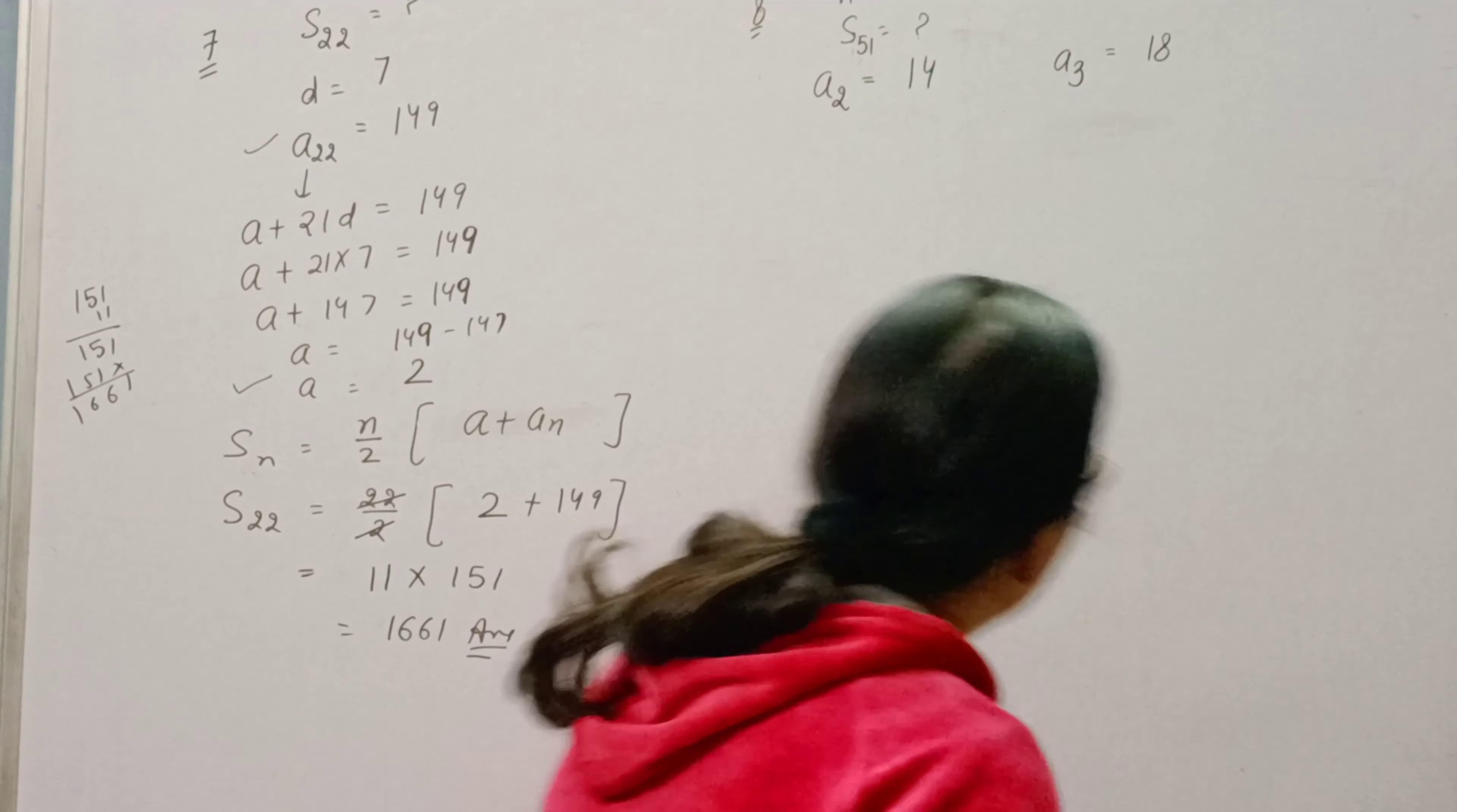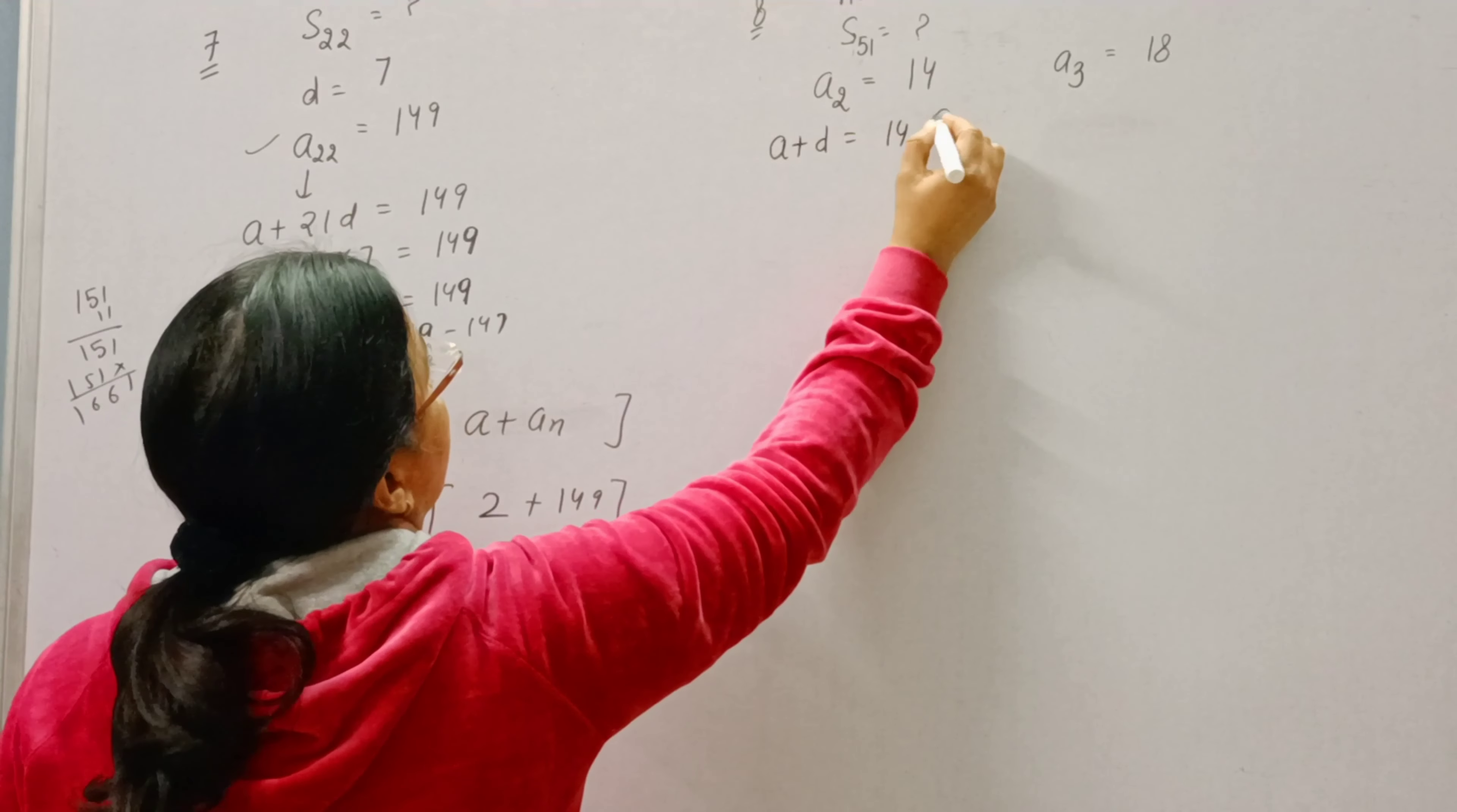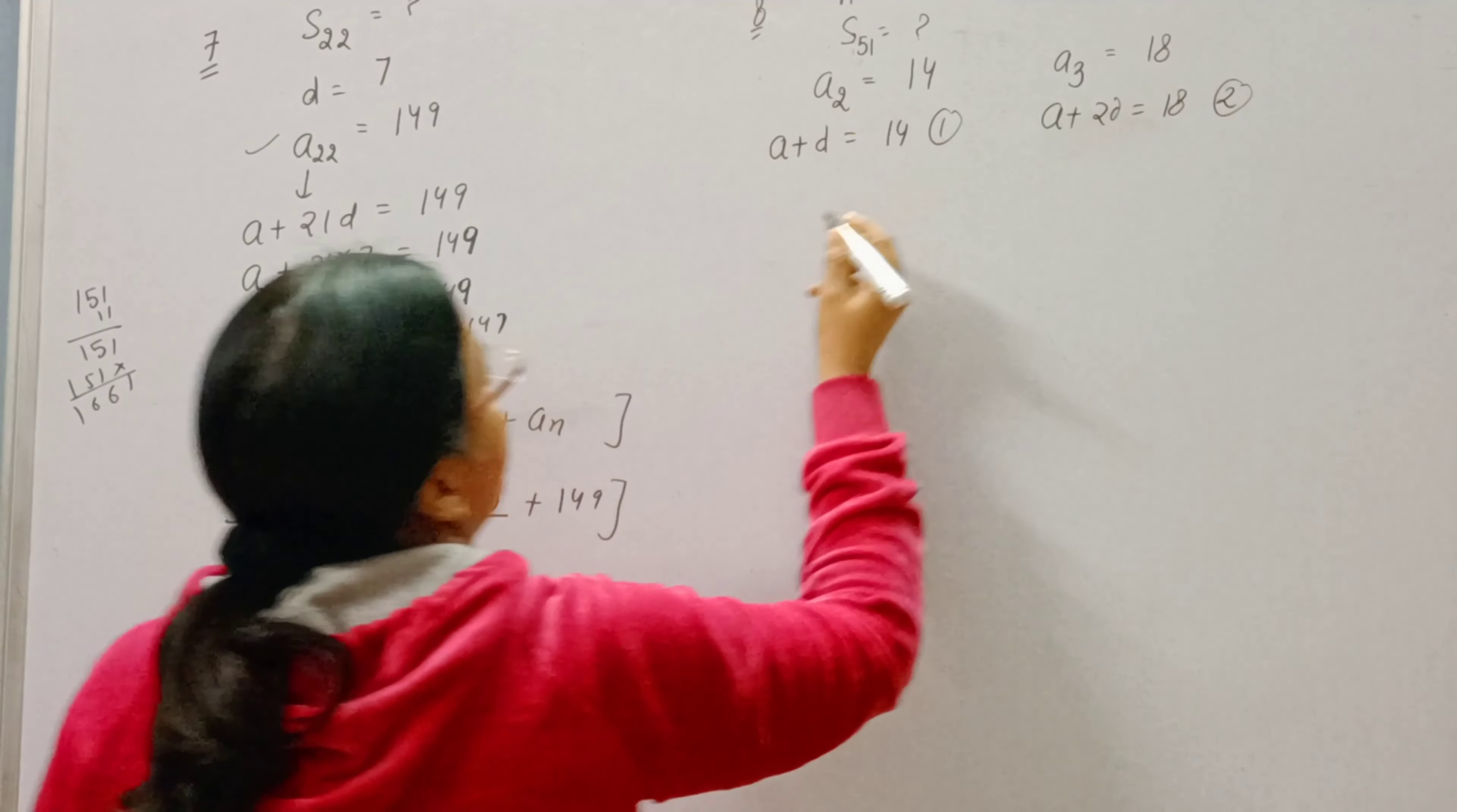How can you write second term? A plus D. So this is the first equation. And how can you write third term? A plus 2D. This is the second equation.